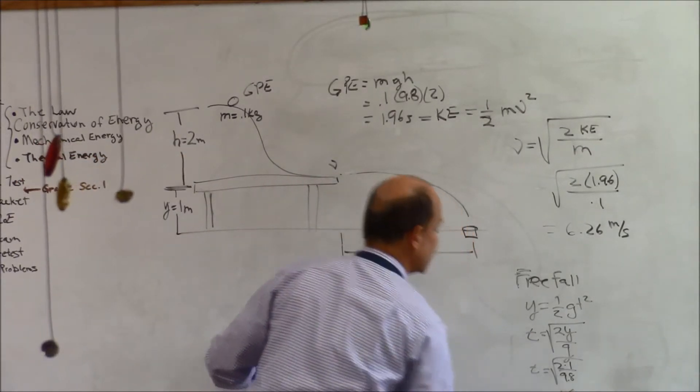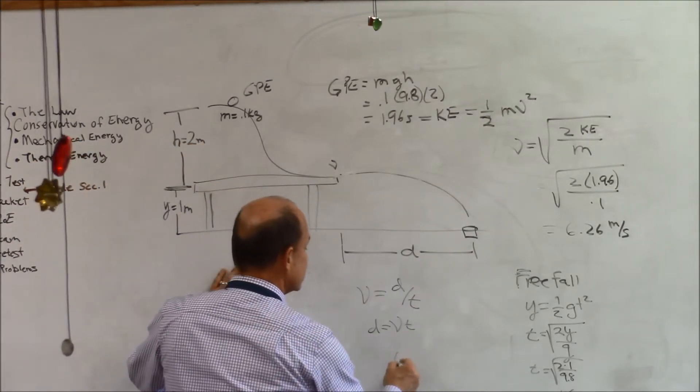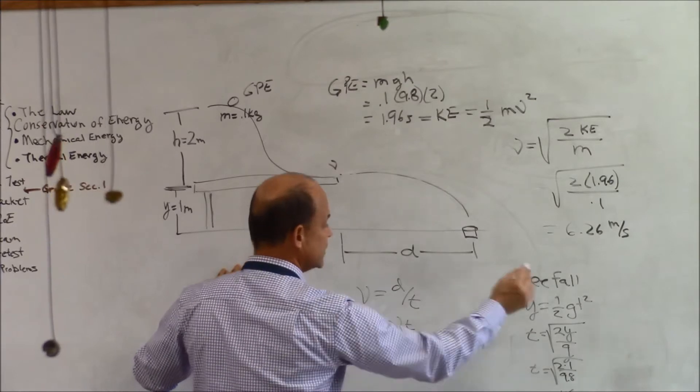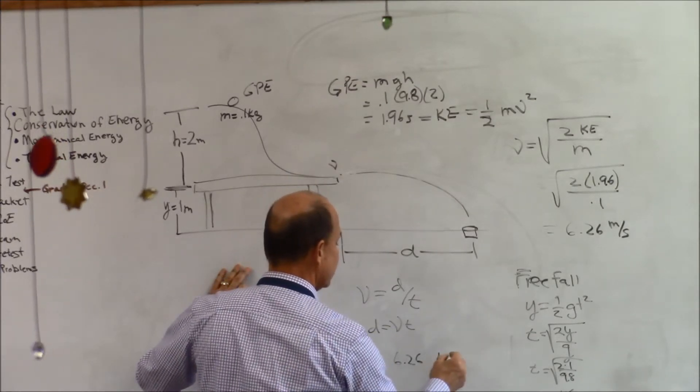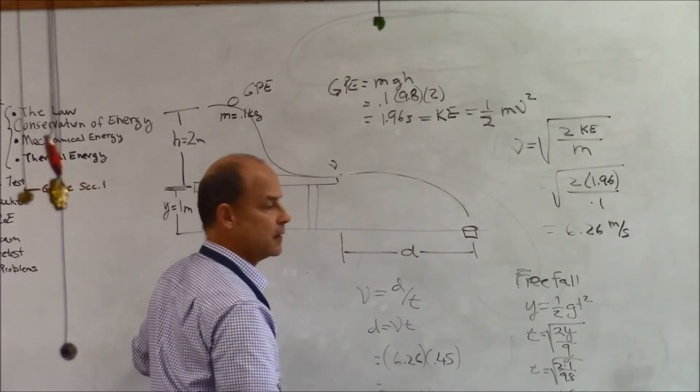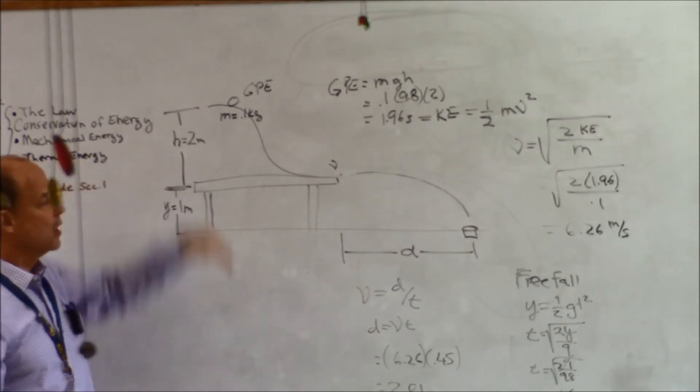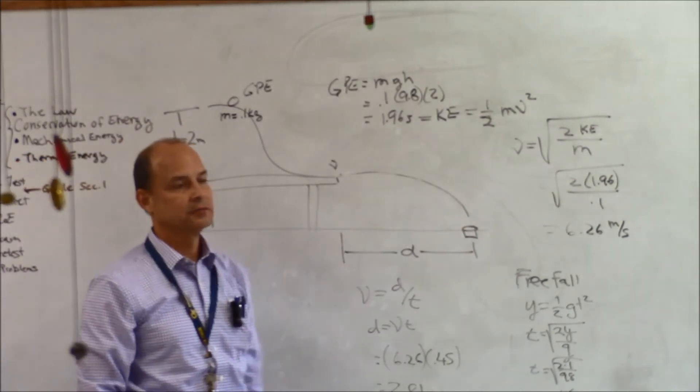I know v, which is 6.26, I know t, which is 0.45, so now we know what d is: 2.81 meters. That's where I place the cup.